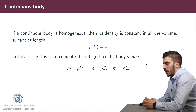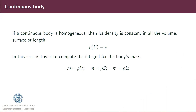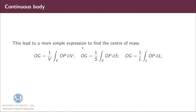If we consider a body that is also homogeneous, then the density is constant, so rho of P is equal to rho. It is trivial to compute the mass of a body because the mass will be rho times V, or rho times S, or rho times L depending on which density we are considering. This leads to a simpler expression of the center of mass: OG equal to 1 over V times the integral over the volume of OP dV, or 1 over S times the integral over the surface of OP dS, or 1 over L times the integral over the line of OP dL.